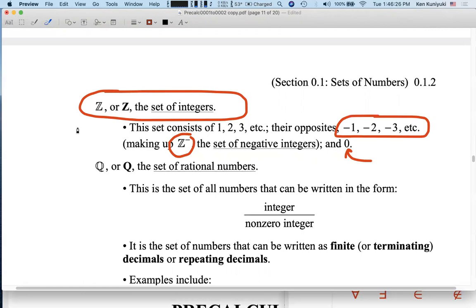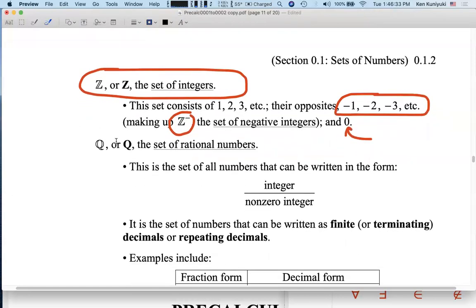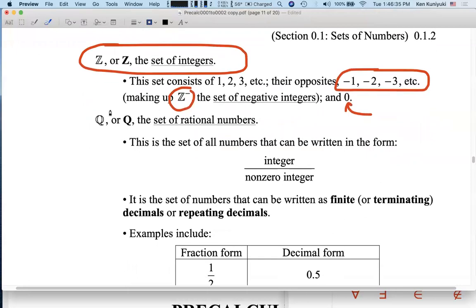Now let's say that we want to go beyond the set of integers. That's where we start making fractions. Then we can think about this new set, Q, the set of rational numbers, ratios of integers. This is the set of all numbers that can be written in the form integer over an integer that's not 0. Remember, it's always illegal to divide by 0.